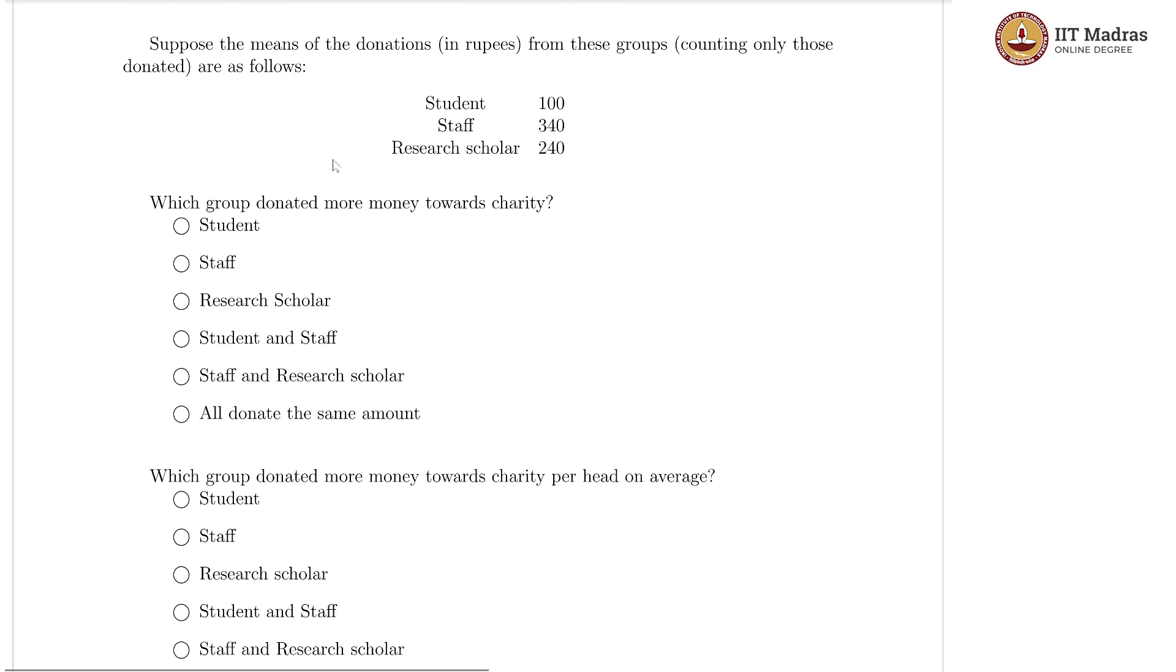Now, we are going to a slightly more interesting question where the means of the donations from these groups are also given. Student on average has given 100, staff has on average given 340 per staff member, and research scholars on average have given 240 rupees per research scholar. Although students are more inclined to donate, they are likely to donate less money as we can observe here.